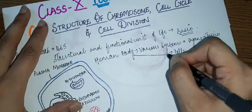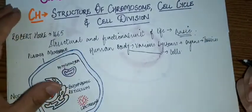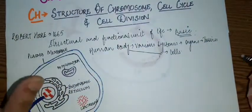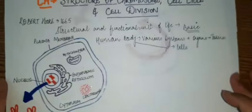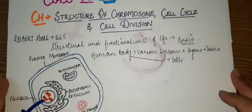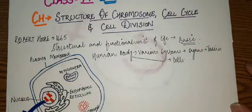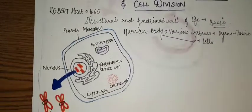So the basic fundamental unit of the human body is cells. All living beings have cells as their basic structural and functional unit.